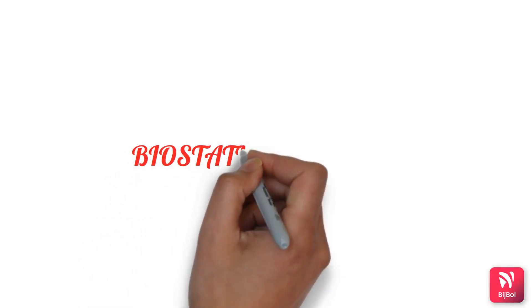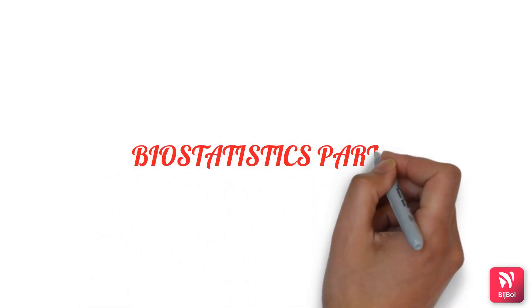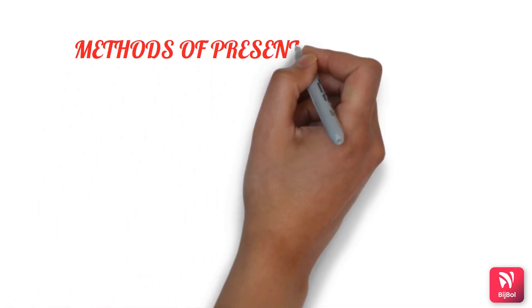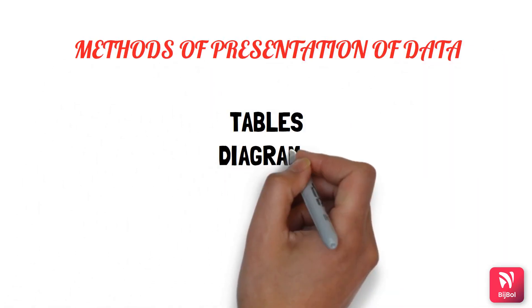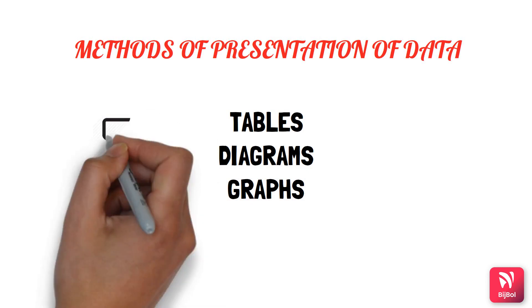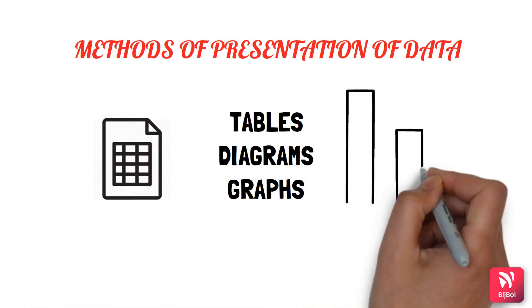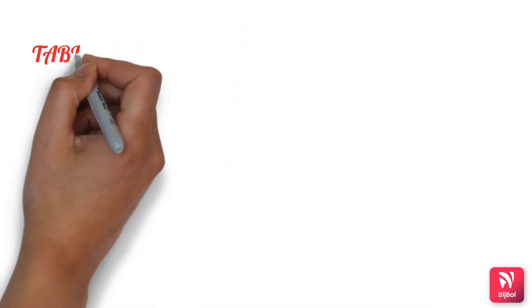Today's topic of discussion is the continuation of biostatistics. This is Part 3, which we are dealing with after sampling. Now the data has been collected and we need to present it. This can be presented in the form of tables, in the form of diagrams, or in the form of graphs. Now let us see each one in detail.